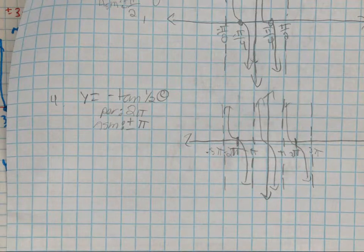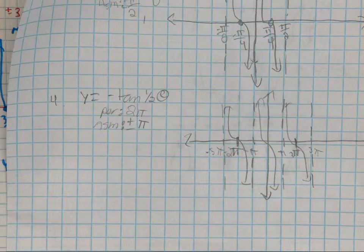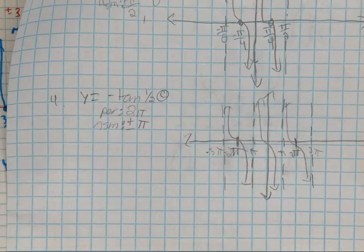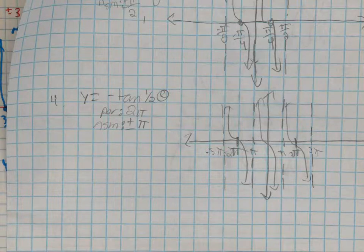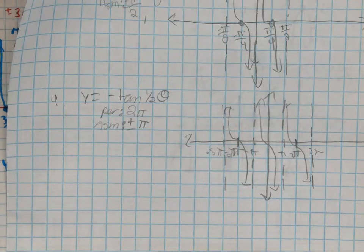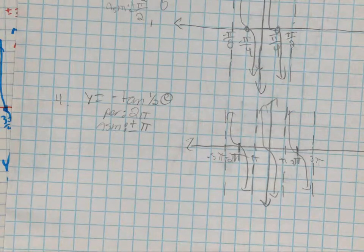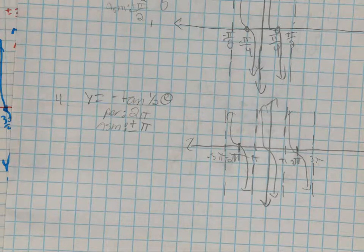Number four: tangent — and if it's negative tangent there's a little twist. Period is two pi, and asymptotes are at plus or minus pi. Very good, good job. Any questions?